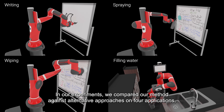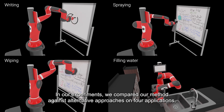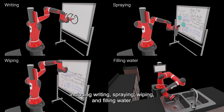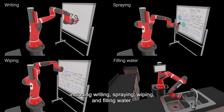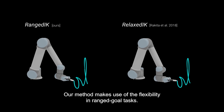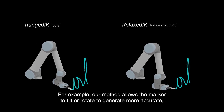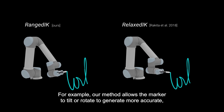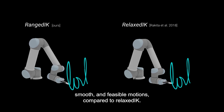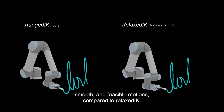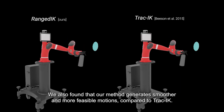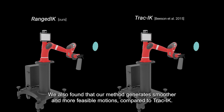In our experiments, we compared our method against alternative approaches on four applications, including writing, spraying, wiping, and filling water. Our method makes use of the flexibility in range goal tasks — for example, allowing the marker to tilt or rotate — to generate more accurate, smooth, and feasible motions compared to RelaxIK. We also found that our method generates smoother and more feasible motion compared to TrackIK.